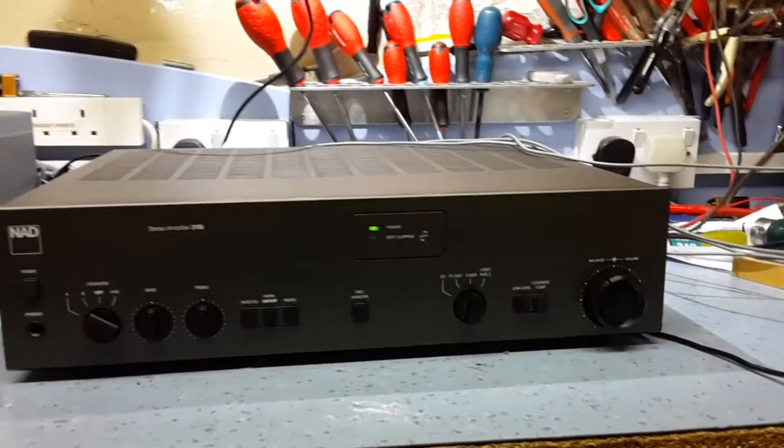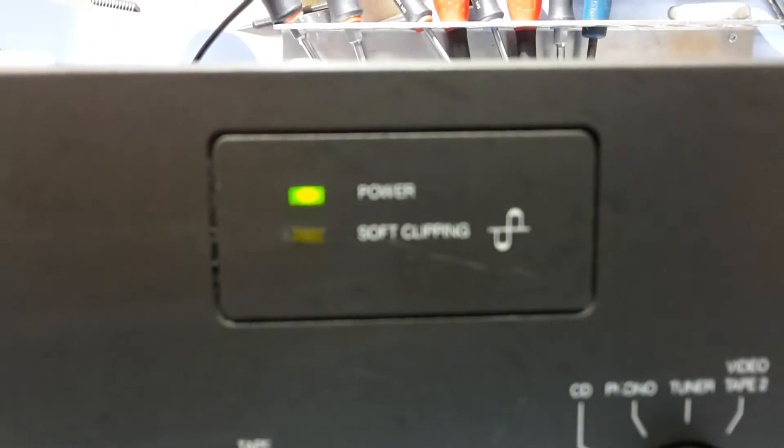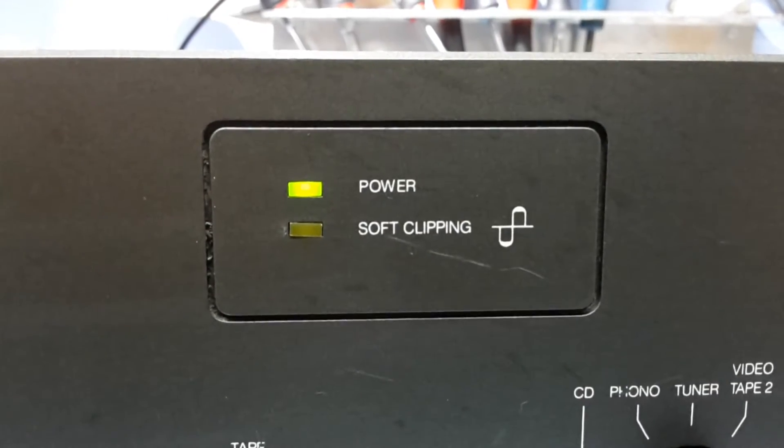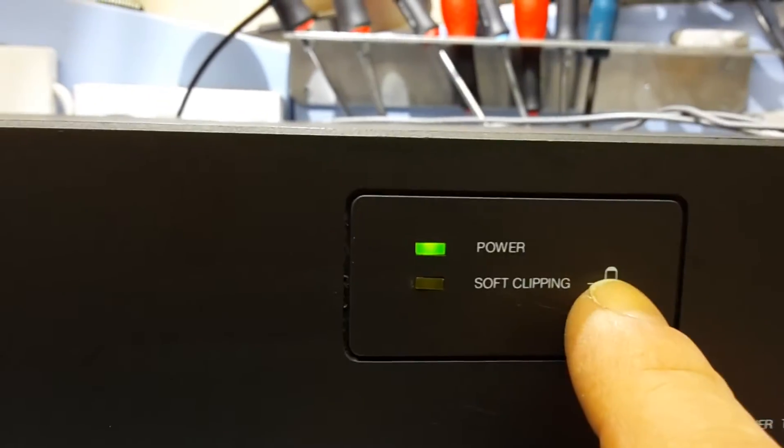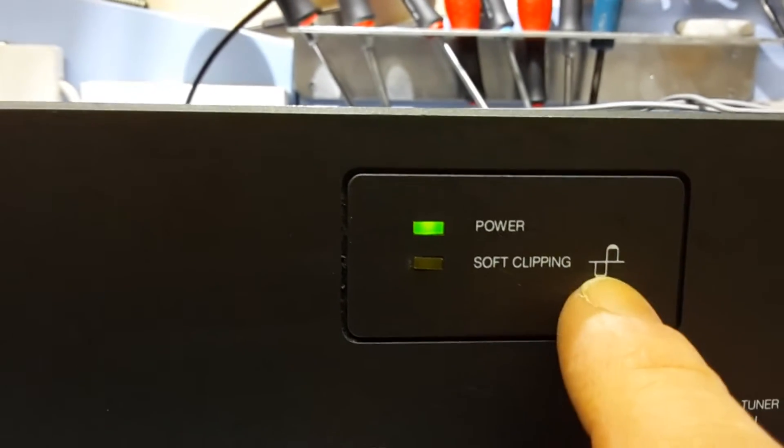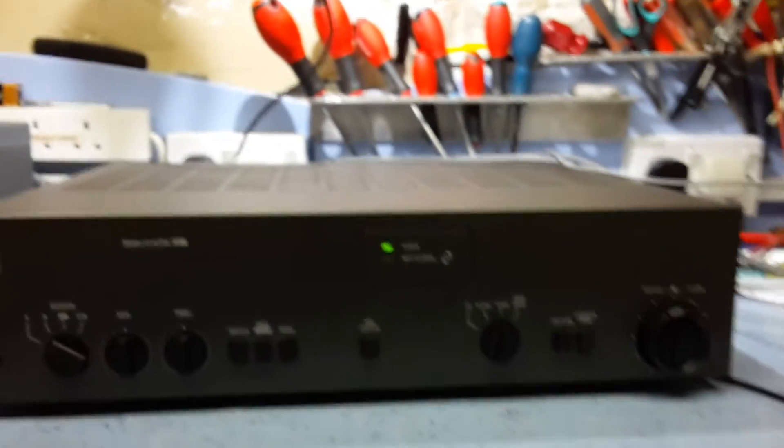So they came up with this soft clipping thing, and as you can see here, rather than just have a discrete switch around the back and no information other than that, they put a soft clipping light on the front and they show you what it's attempting to do is round off the waveform rather than just square it off.